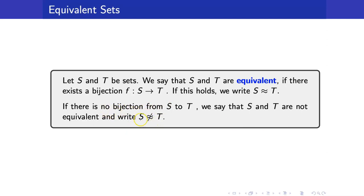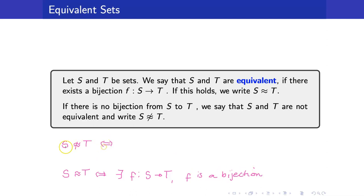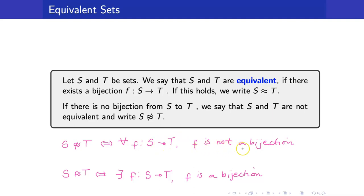If there is no bijection from S to T, we say that S and T are not equivalent. The definition of S not being equivalent to T is: for all functions from S to T, F is not a bijection. So therefore, when we are showing that two sets are not equivalent, we start with 'let F be any function,' then show that it is not a bijection.